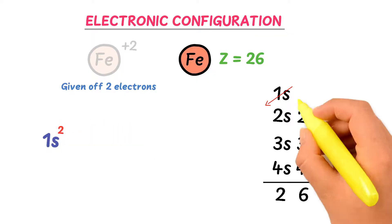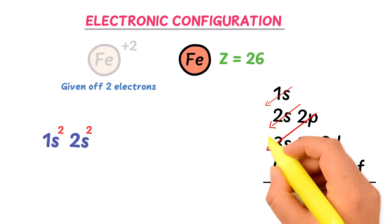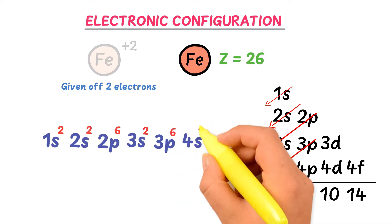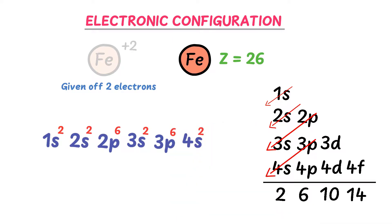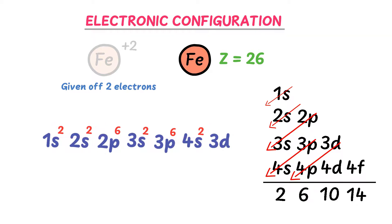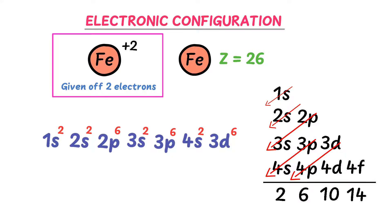I write 1s², then 2s², then 2p⁶, then 3s², then 3p⁶, then 4s². At this point: 2+2+6+2+6+2 = 20 electrons. We need 6 more electrons, so I write 3d⁶. This gives us the electronic configuration of the neutral iron atom: 1s² 2s² 2p⁶ 3s² 3p⁶ 4s² 3d⁶.